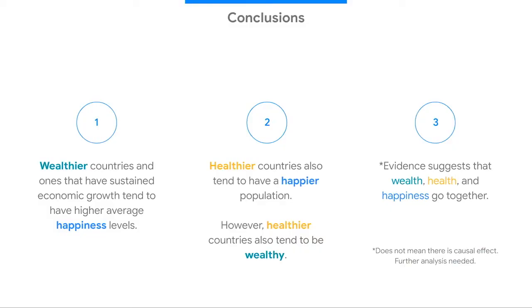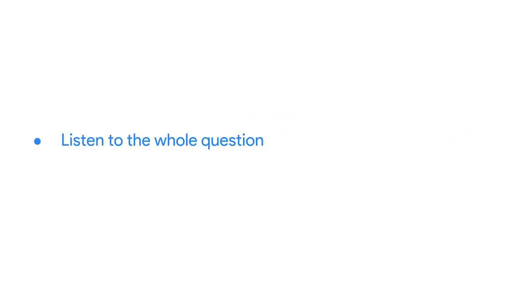We'll start with a really simple one: listen to the whole question. It can be really tempting to start thinking about your answer before the person you're talking to has even finished asking their question. On slide 11 of our presentation we outline our conclusions. After explaining these conclusions, one of our stakeholders asks 'How was happiness measured for this project?' It's important to listen to the whole question and wait to respond until they're done talking. Then take a moment to repeat the question — it helps you make sure you're understanding it, gives the person a chance to correct you if not, and ensures anyone who couldn't hear the question still knows what's being asked.